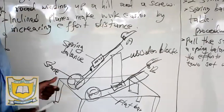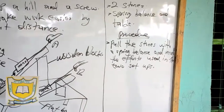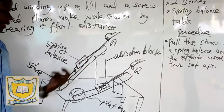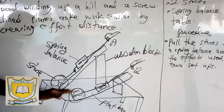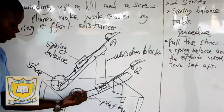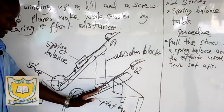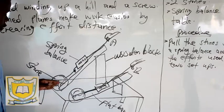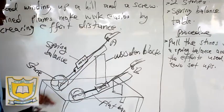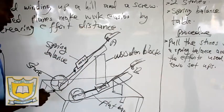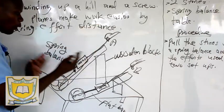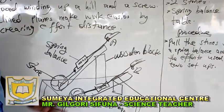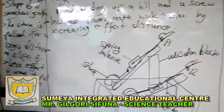What is the procedure? Make sure that you have a string or wire to tie on the stone, then connect the string to the spring balance. The spring balance will measure the effort used to pull the stones. On activity B also, you tie the stone with a string along the flat bar, then connect the string to the spring balance. As you start pulling, you read on the spring balance what effort is used on a steep slope and what effort is used on the gentle slope.